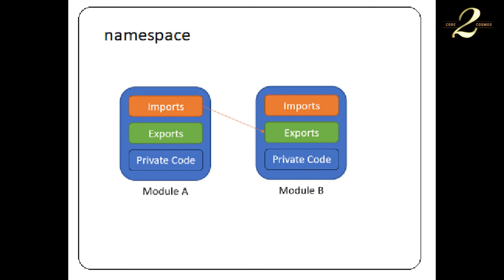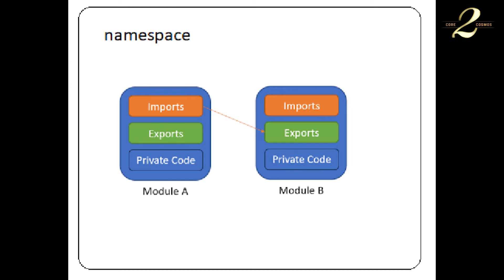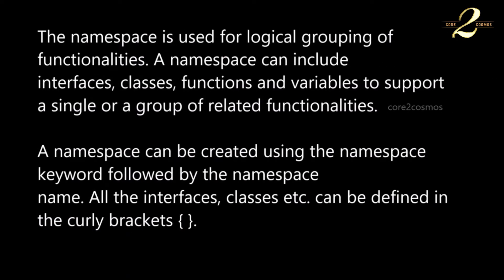Modules and namespaces are both examples of the encapsulation concept in object-oriented programming. When you group several logics into a single unit, you call that concept encapsulation. Several functions can be grouped together as a single unit, which we call a module, and several modules can be grouped together as a single unit, which we call a namespace. A namespace is used for logical grouping of functionalities and can include interfaces, classes, functions, and variables to support a single or a group of related functionalities.